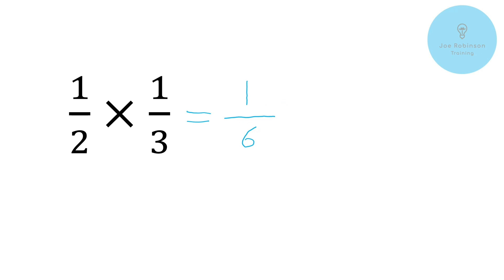Okay so it really couldn't be simpler. This is just a nice simple video for us today. One half times one third is one sixth. Let's have a look now at our next question. So our next question asks us to do two fifths times by one quarter.